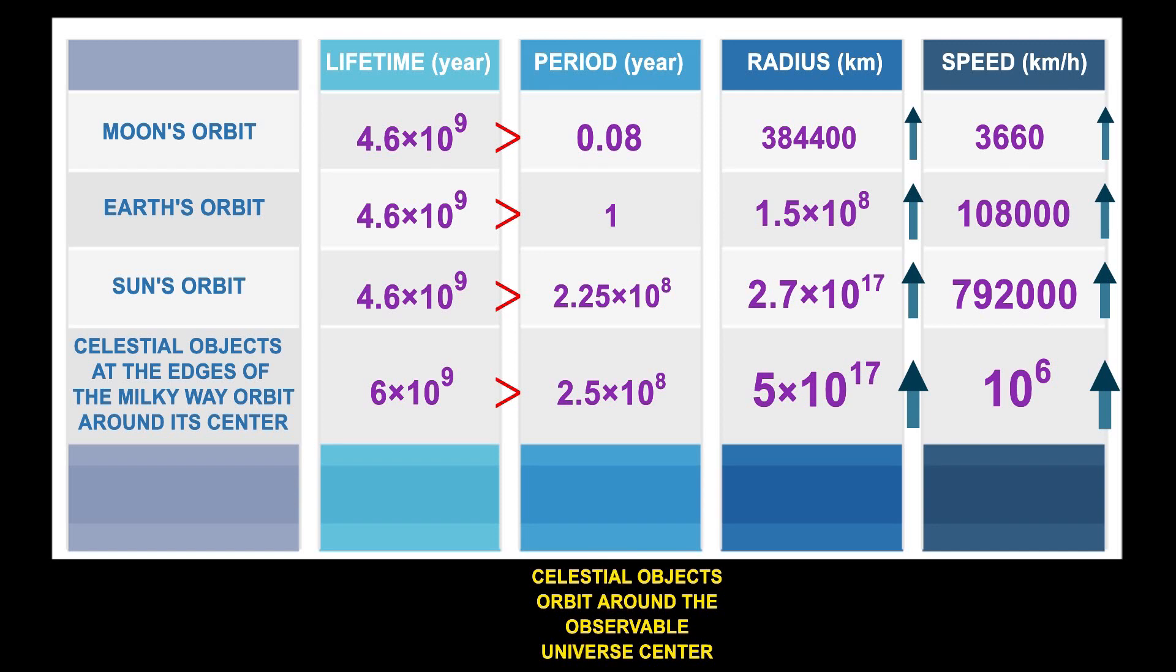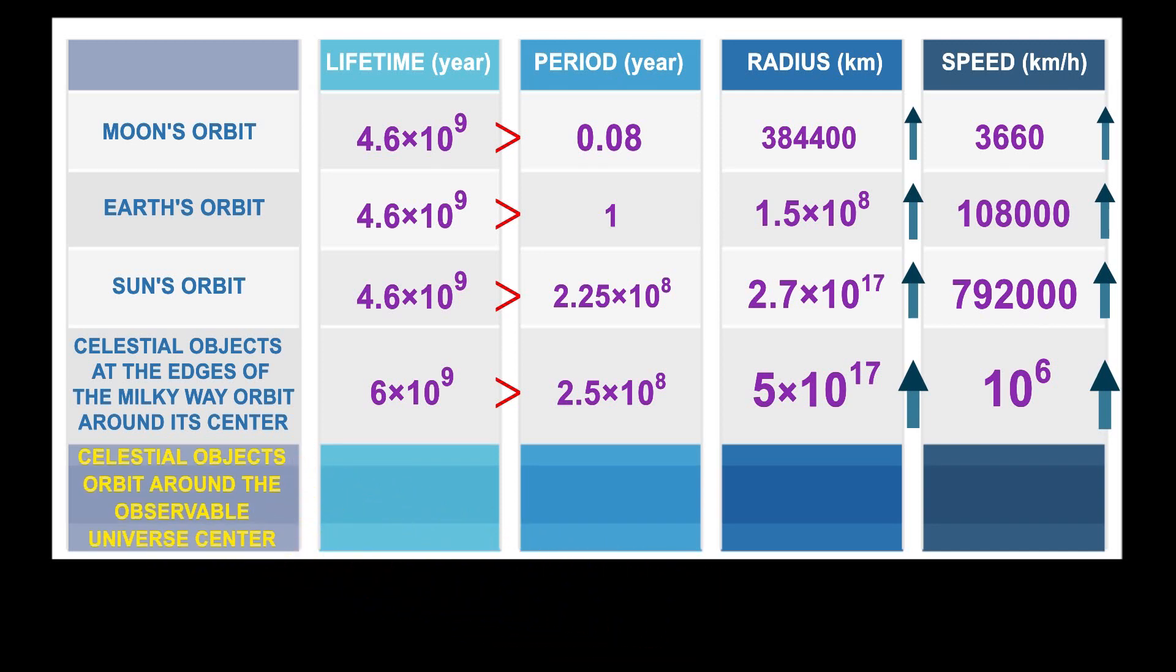To complete this table, we need the measure of the radius of the observable universe. The most recent research recognizes the most distant celestial objects at 10 to the power of 24 km. Since the age of a universe is estimated at about 13.7 billion years, to measure the speed of a celestial object rotating at the edges of the observable universe would take the rotation period between 1 and 10 billion years.